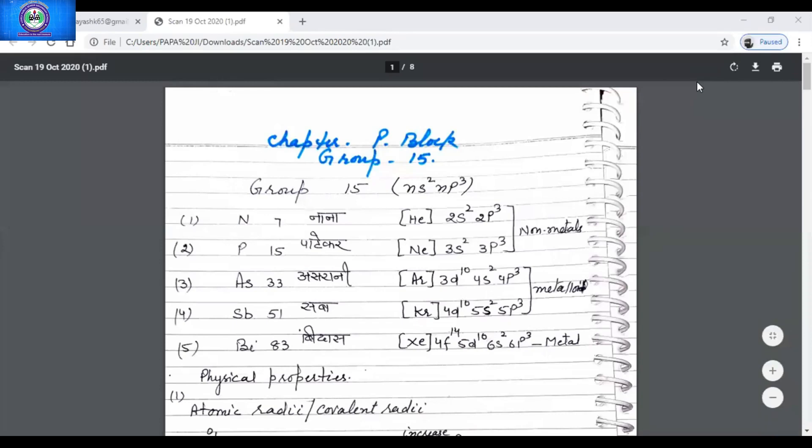P block elements are also known as representative elements. In class 11th you have already studied about group 13 and group 14 elements. Today in class 12th we shall be studying about group 15 elements, that is nitrogen family.